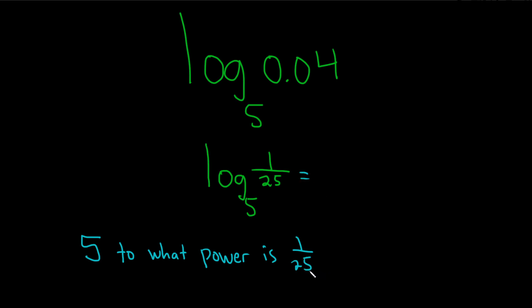We know that 5 squared is 25. To get a fraction, we need a negative exponent. So negative 2 will be the answer.